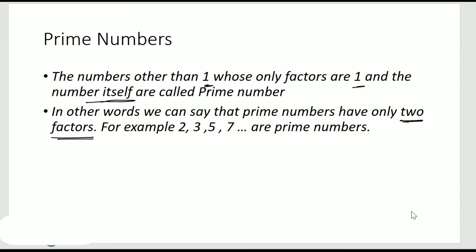The examples of prime numbers are 2, 3, 5, 7 and so on. Now, why are these prime numbers? Let's see. For 2, the factors are 1 times 2. There are no other numbers which when multiplied gives me 2. Similarly, for 3, 1 times 3 gives me 3.